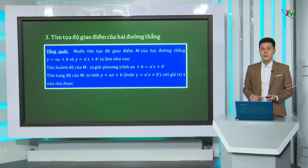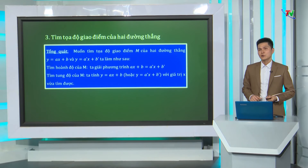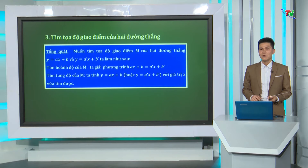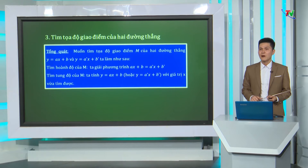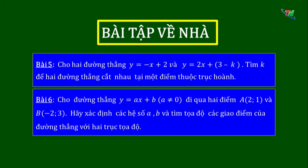Các em thân mến, buổi học hôm nay chúng ta ôn tập kiến thức đường thẳng song song, đường thẳng cắt nhau. Vận dụng kiến thức, chúng ta đi làm các dạng bài tập: thứ nhất, tìm tham số, hệ số thỏa mãn điều kiện cho trước của bài toán; thứ hai, tìm tọa độ giao điểm của 2 đường thẳng. Để củng cố kiến thức, xin mời các em làm bài tập về nhà sau.